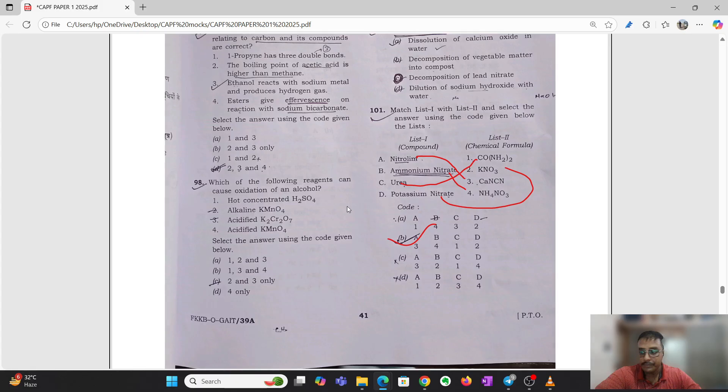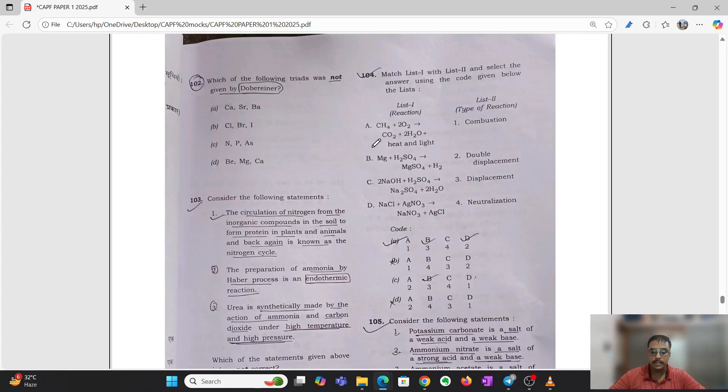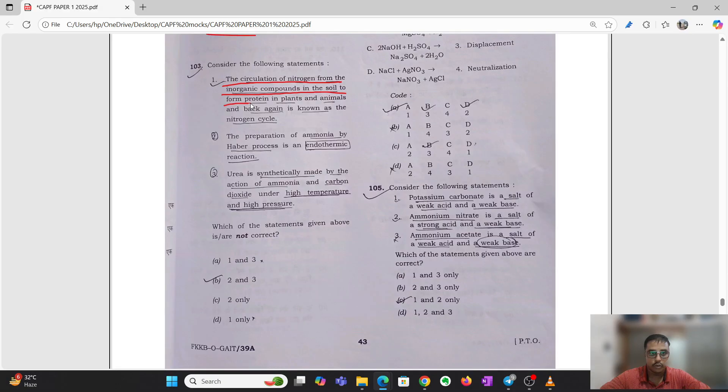Second question: which of the following triads was not given by Dobernier? It is NPAs. Remember this. Next question is the circulation of nitrogen from the inorganic compounds in the soil to form protein in plants and animals and back again is known as nitrogen cycle. This is wrong because here is the inorganic way not in the organic way circulation.